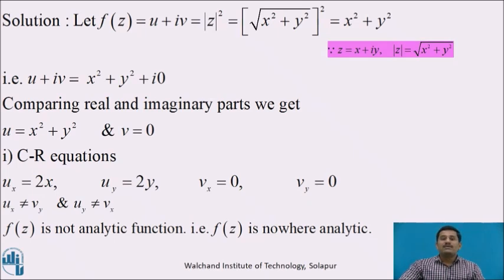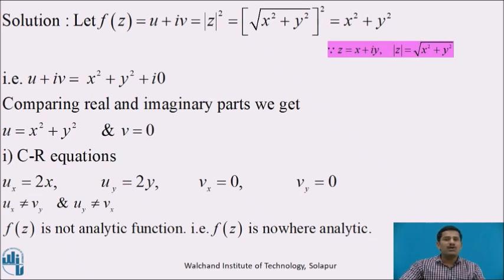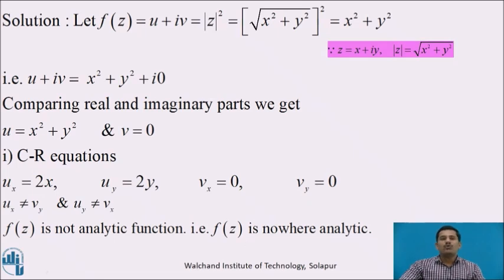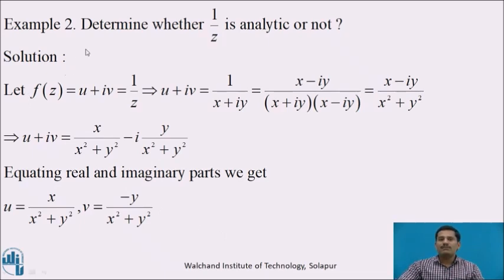Since the Cauchy-Riemann equations are a necessary condition for analyticity, and the necessary condition fails here, we can say that f(z) is not analytic at any point in the complex plane. Functions that are not analytic at a single point in the complex plane are called nowhere analytic. Therefore, f(z) = |z|² is nowhere analytic.